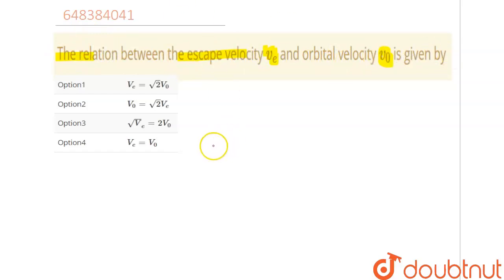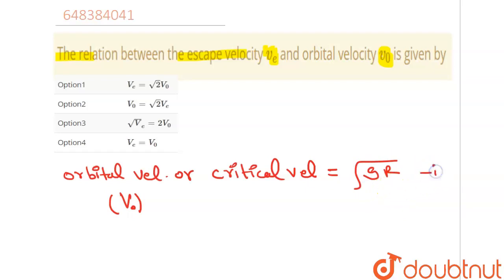So first of all, we must know that the critical velocity is also known as the orbital velocity of a satellite of planet of radius capital R. Let me just write that orbital velocity or critical velocity equals to this formula. We are representing it as V0 equals root over G into R. Let's take this as equation 1.